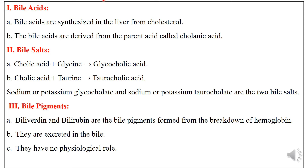Bile is made up of bile acids. Bile acids are synthesized in the liver from cholesterol and they are derived from the parent acid known as cholanic acid. First cholanic acid is formed, and then from cholanic acid various other bile acids are formed.